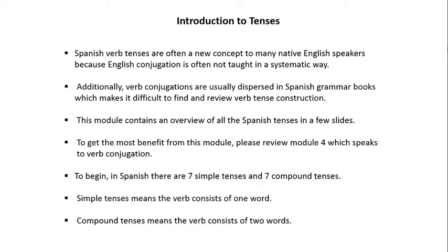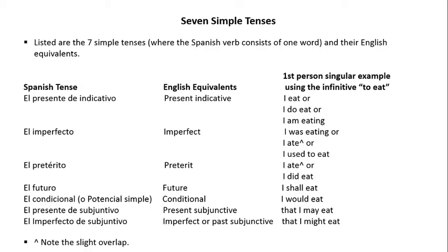To begin, in Spanish there are seven simple tenses and seven compound tenses. Simple tenses mean the verb consists of one word. Compound tenses means the verb consists of two words. Now listed below are the seven simple tenses, where the Spanish verb consists of one word. And to the right, I give their English equivalents.